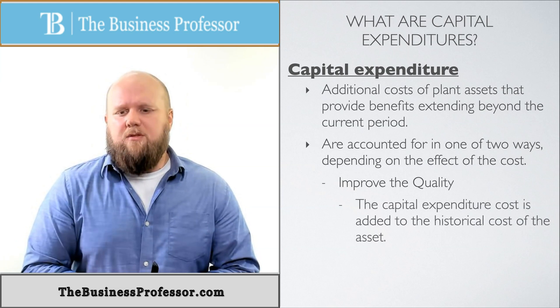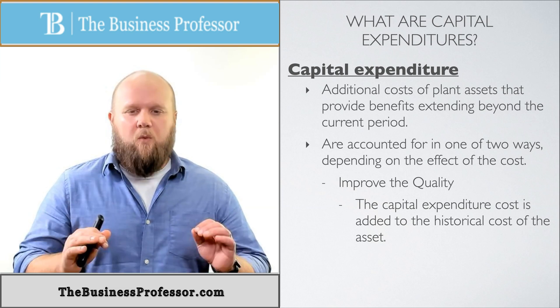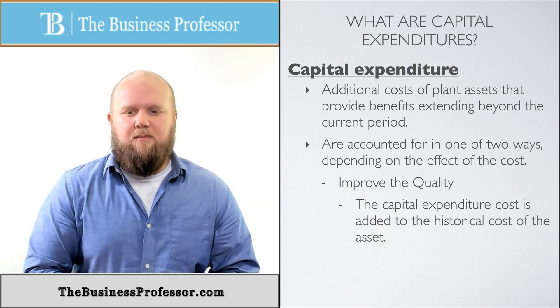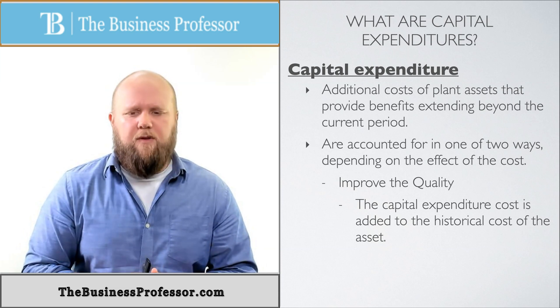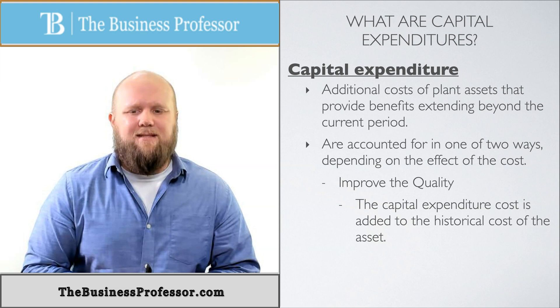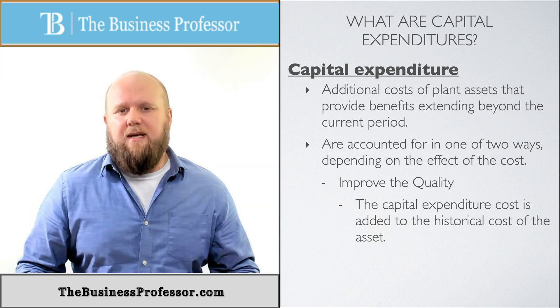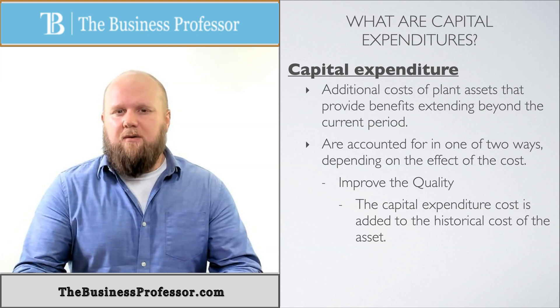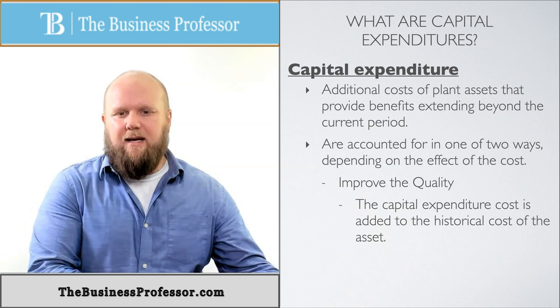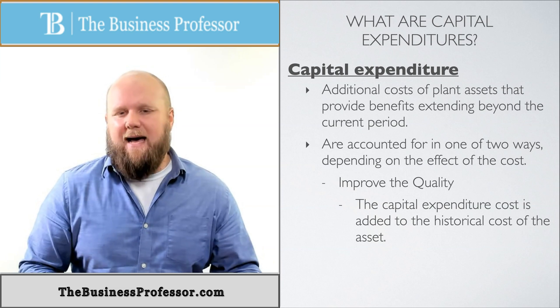And that is, when you're dealing with it in this classification, improving the quality of it. If it falls in this classification, the capital expenditure cost is added to the historical asset or historical cost of the asset. Pretty much what I'm saying is if it falls in this category, you're just going to add it to the asset. Okay, it's capitalized in the asset. So whatever the asset is, that's what you're going to debit. You're going to add it to it.